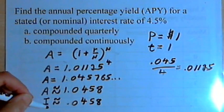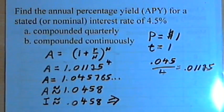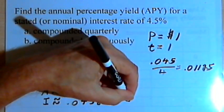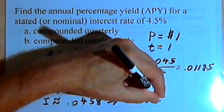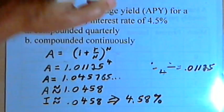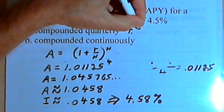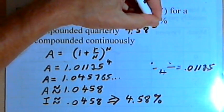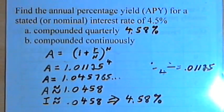Then what we want to do is turn that into a percentage. So we just multiply that by 100 and make it a percentage, 4.58%. So the answer to the compounded quarterly part is 4.58%, which makes sense. It's a little more than the 4.5% that we started with.